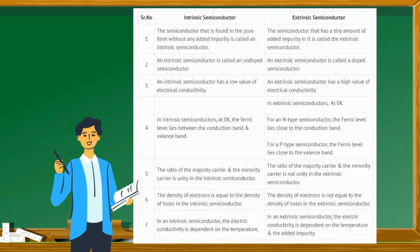Number 1: The semiconductor that is found in the pure form without any added impurity is called an intrinsic semiconductor. The semiconductor that has a tiny amount of added impurity in it is called the extrinsic semiconductor.